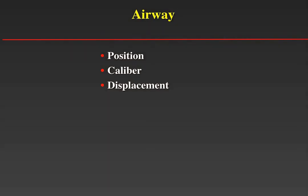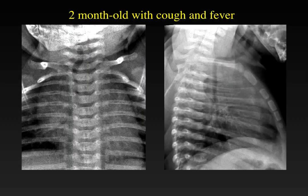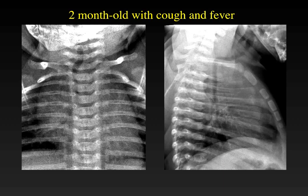The next topic is the airway. We need to consider the position, caliber, and displacement of the airway. The normal airway in a child should be slightly to the right of midline because of the normal position of a left aortic arch. On the lateral view, the trachea should have a nice gentle curve that mimics the curve of the spine posteriorly to it.